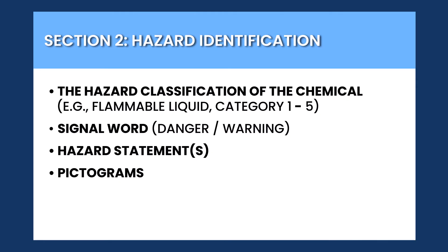Hazard severity is ranked by category, from category 1, most severe, to category 5, least severe. You'll also find the signal word, which tells you the level of risk associated with the chemical. There are two signal words used on SDSs: 'danger' for more severe hazards and 'warning' for less severe hazards.